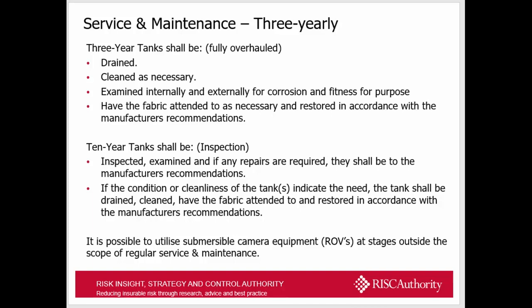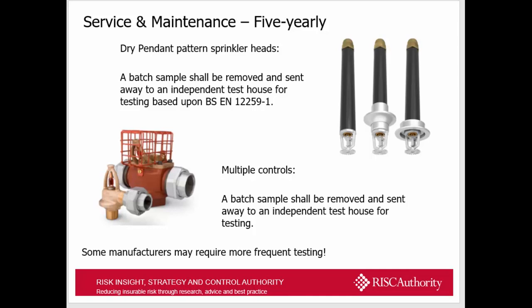In TB203, it is possible to use submersible cameras or ROVs outside the scope of regular service and maintenance to inspect a 10-year tank. Moving on from three-yearly to five-yearly: dry pendant-type sprinkler heads — a batch sample shall be removed and sent to an independent test house for testing based on 12259-1 standards. Multiple controls — also known as multiple jet controls — are covered in Technical Bulletin TB213 and also require a batch sample sent away every five years for independent testing, though manufacturers may require this sooner.